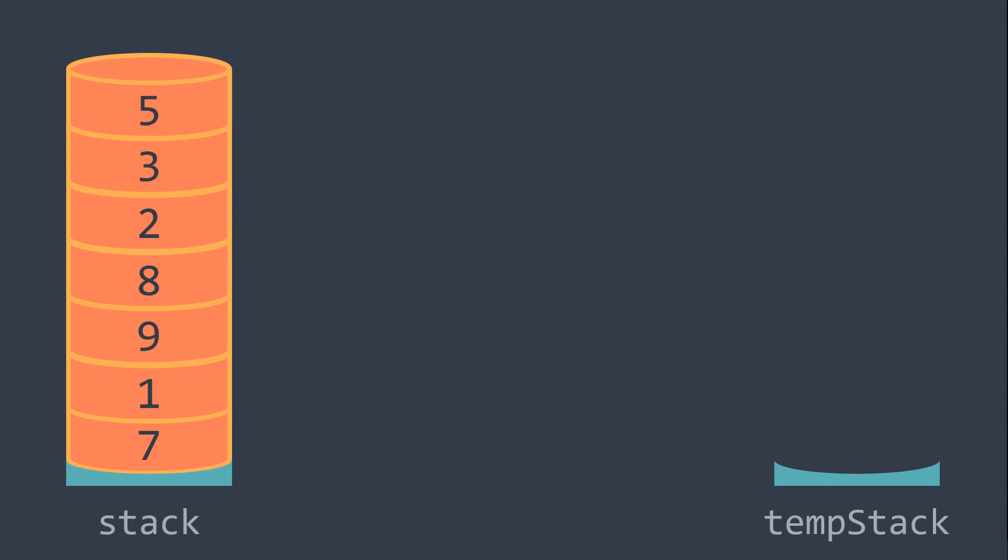So how can we apply insertion sort on a stack? We pop the element at the top of the stack, then while it's smaller than the element at the top of the temporary stack, we pop that element and push it back into our stack. After that, we push our popped element into the temporary stack. We repeat until there are no elements left in the stack.